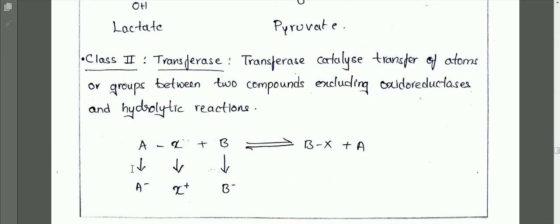In transferase reactions, component A contains a product X-plus, and component B contains a product B-minus. An exchange of components takes place — the B-minus is replaced with X-plus from component A. It's not just freely giving the product; it is also taking B-minus in return. This is the transfer.